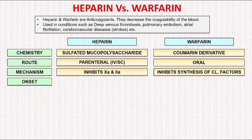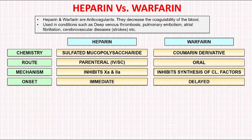Next is the onset of action. Heparin has an immediate onset while warfarin has a delayed onset. Warfarin has a delayed onset because it inhibits the synthesis of new clotting factors in the liver but has no effect on the already formed clotting factors in the circulation. So the pool of these already formed clotting factors gradually decreases depending on their half-lives. After these already formed clotting factors get depleted, the action of warfarin becomes manifest.